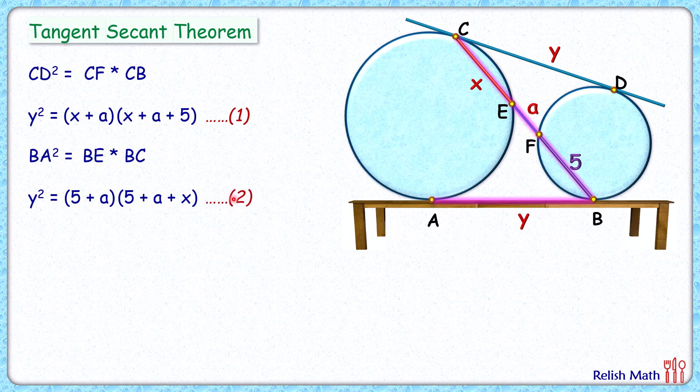Now from equation one and equation two, comparing them, we'll get (x + a)(x + a + 5) equals (5 + a)(5 + a + x). Now opening the brackets here, multiplying x with all these three terms, then multiplying a with these three terms, that equals multiplying 5 with these three terms.